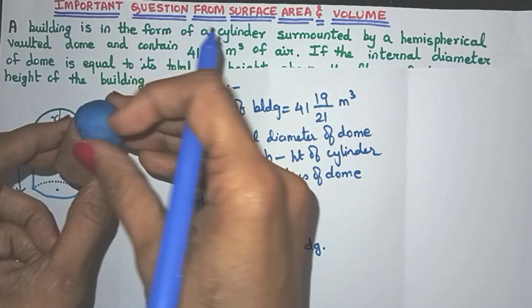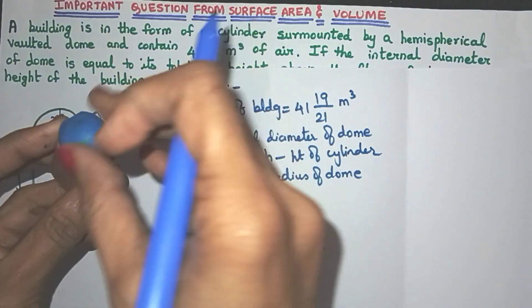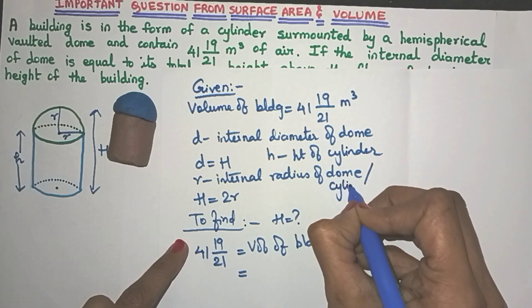It's actually the volume of the cylinder plus the volume of the hemisphere, both of them. And also friends, did you notice that both of them will always have the same radius because it's surmounted, kept on top. So let me also write here,